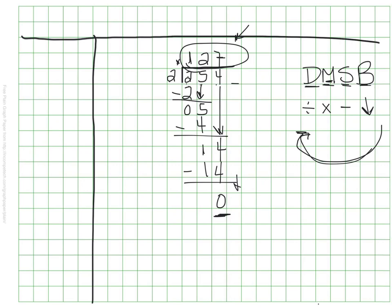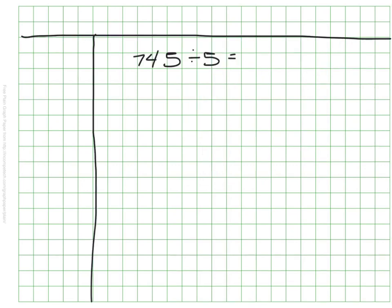Long division isn't really too bad of a process. It just takes a little bit of time to get the hang of it. We'll do one more here in the video, and then, of course, we'll practice more in class together. This time, we have 745, and we're dividing it by 5. So again, we're going to get set up with our long division, so we don't have to count by 5s all the way to 745.